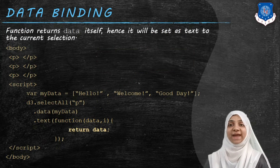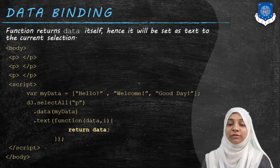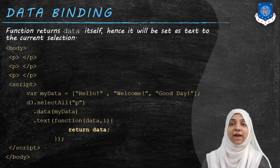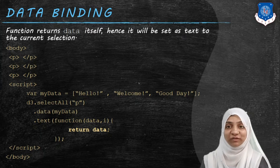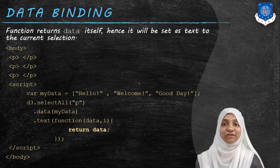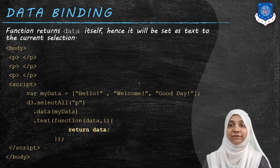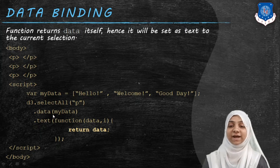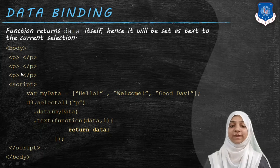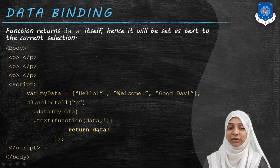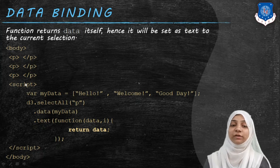This function of data will execute as many times as there are elements in the array. In this example there are three elements, so it executes three times. First time, d stores 'hello' and that gets returned and set as text for the first p tag. Second time, d stores 'welcome' and that gets set as text for the second paragraph. Third time, 'good day' gets stored and set as text for the third p tag.